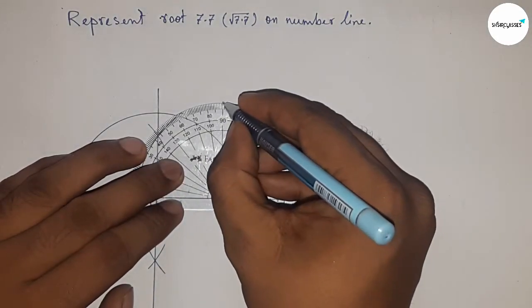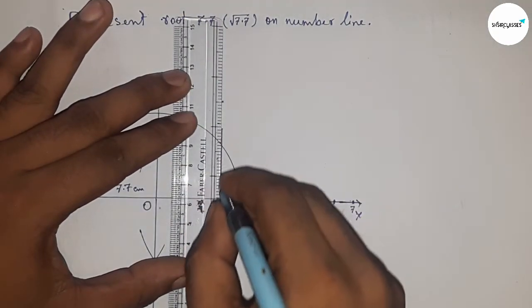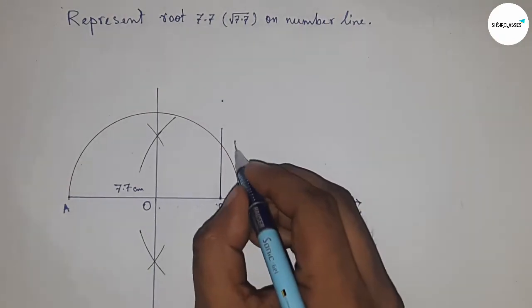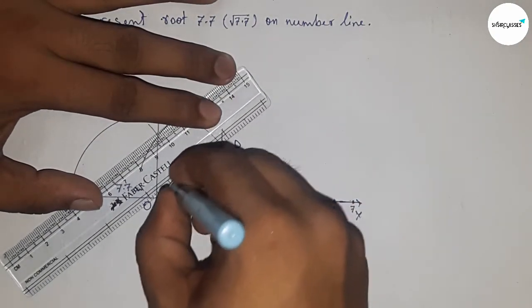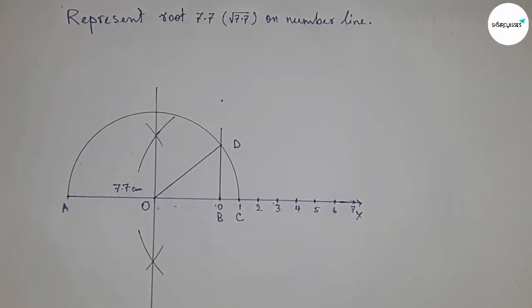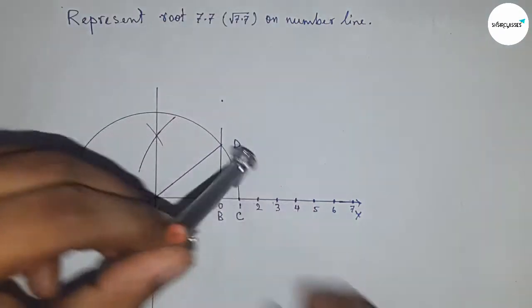Join the line, which meets at point D. Now join O and D. Take the length BD using a compass to draw an arc which meets the number line at point P.